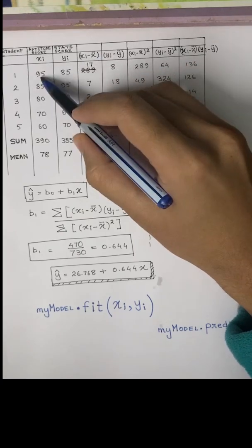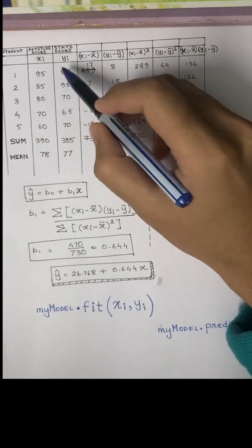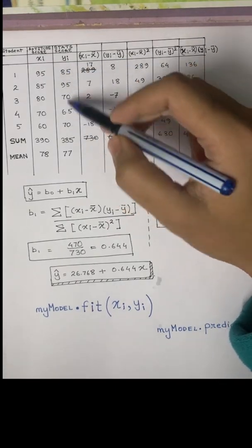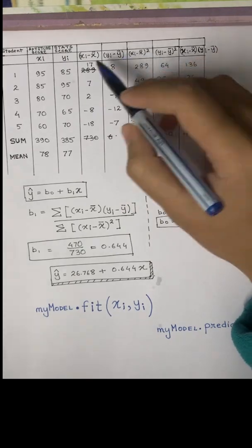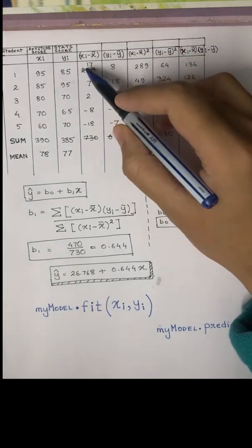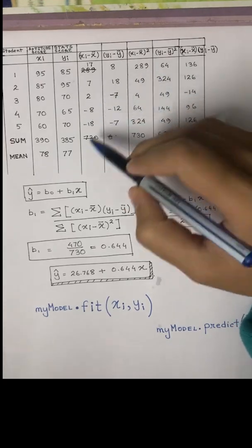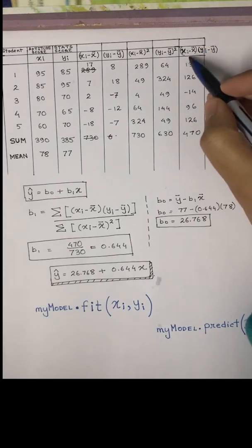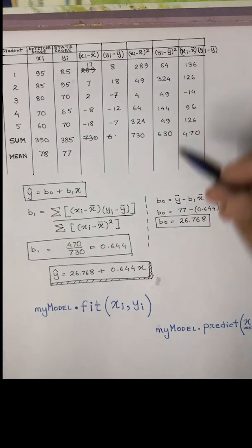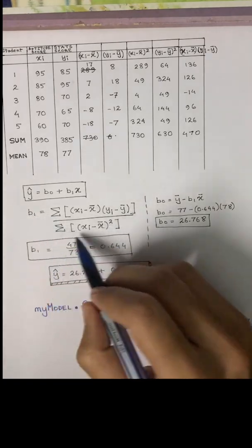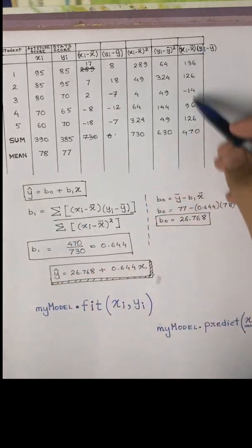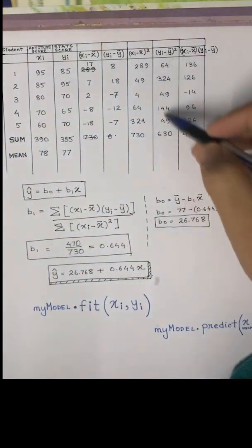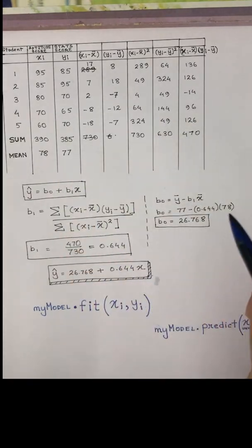Similarly for y, this is yi minus y average, the average of all these y values. And the whole square of this column: 17 squared is 289, and so on. Also yi squared, the square of yi scores, and the multiplication of (xi minus x̄)(yi minus ȳ). We do this because in the slope formula we have this expression. We need to calculate them from here, and finally at the end, the sum of each column.